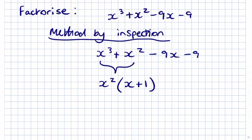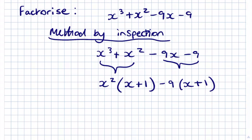We need to use this common factor of (x + 1) through all the terms. So to get another factor of (x + 1) from the remaining terms, we can take out a factor of minus 9. So if we factor out minus 9 from -9x - 9, we'll get (x + 1). Now because we've got two common factors of (x + 1), we can factorise (x + 1) from the whole equation, giving us (x + 1)(x² - 9).